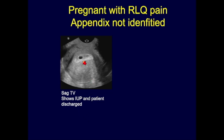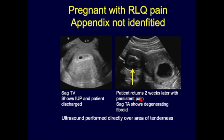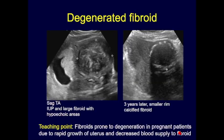A pregnant patient with right lower quadrant pain, normal ovaries, unidentified appendix, and IUP was discharged. Two weeks later, a transabdominal image revealed a degenerating fibroid as the pain source. This emphasizes the importance of starting with transabdominal images — exophytic fibroids and masses can be missed with only small field-of-view transvaginal imaging. Fibroids are prone to degeneration during pregnancy due to rapid uterine growth and decreased blood supply; the fibroid shrank over three years and showed classic peripheral calcification.